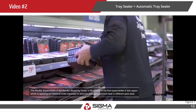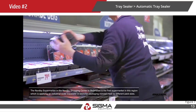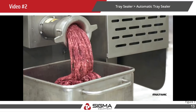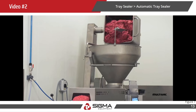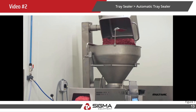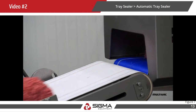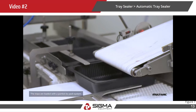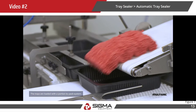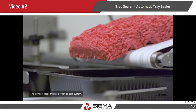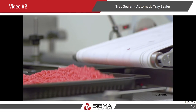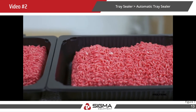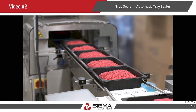We've all been in Walmart or a larger grocery chain and seen the packages of meat there. In the back of the store you have a meat grinder, a dumper hopper, and then portioning with x-ray or metal detection — that drops the product right into the tray and then into the chamber of the tray sealer.